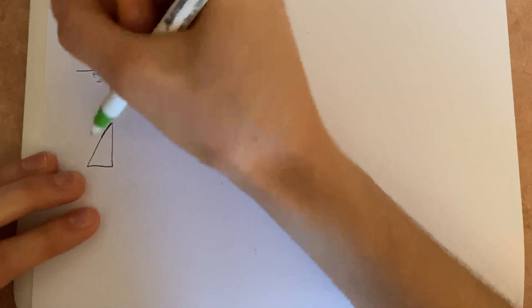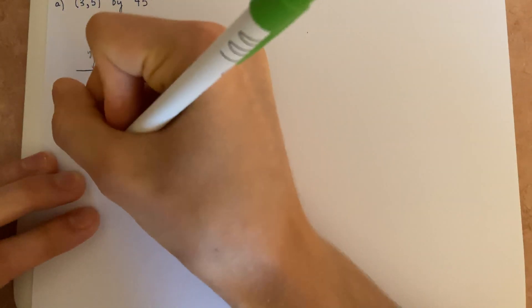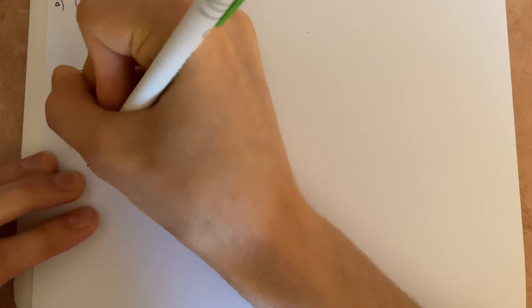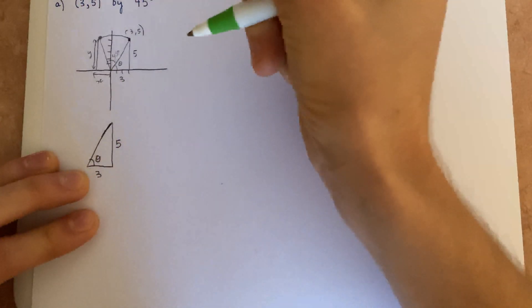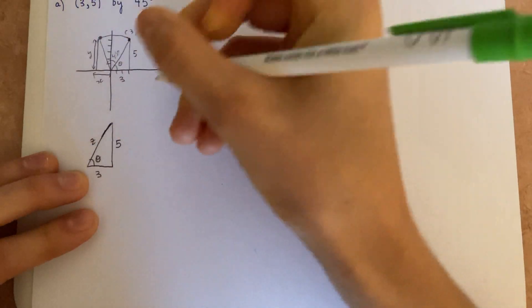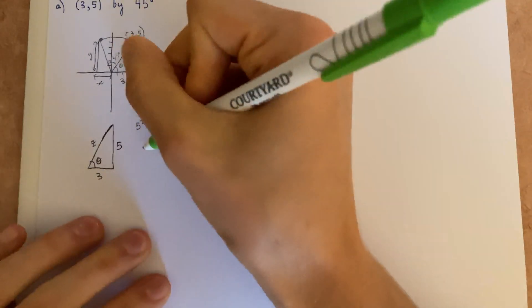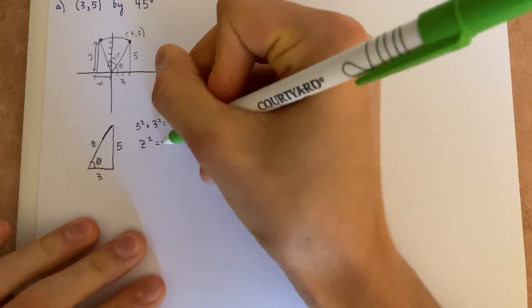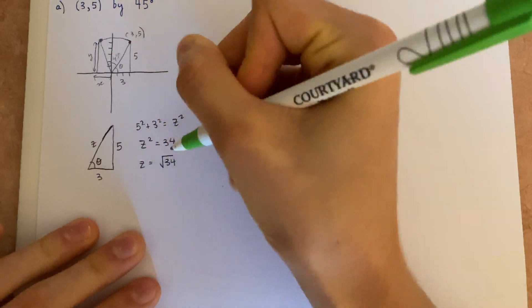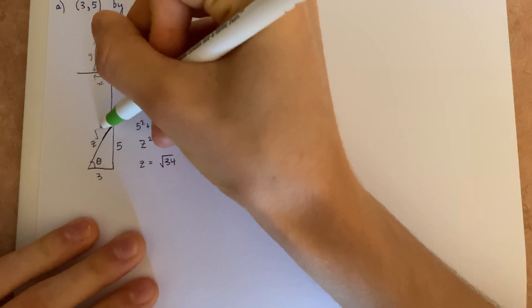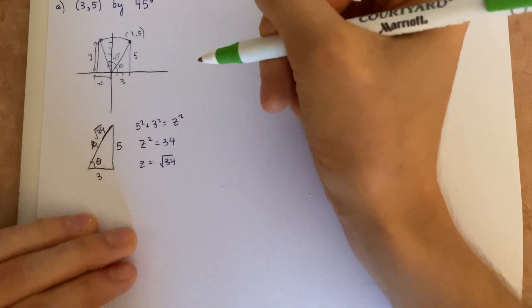We can solve for this length using the Pythagorean theorem. So this is 5 and this is 3. Let's call this z. So 5 squared plus 3 squared equals z squared. That means z squared equals 34, which means z equals the square root of 34. So this length right here is the square root of 34.